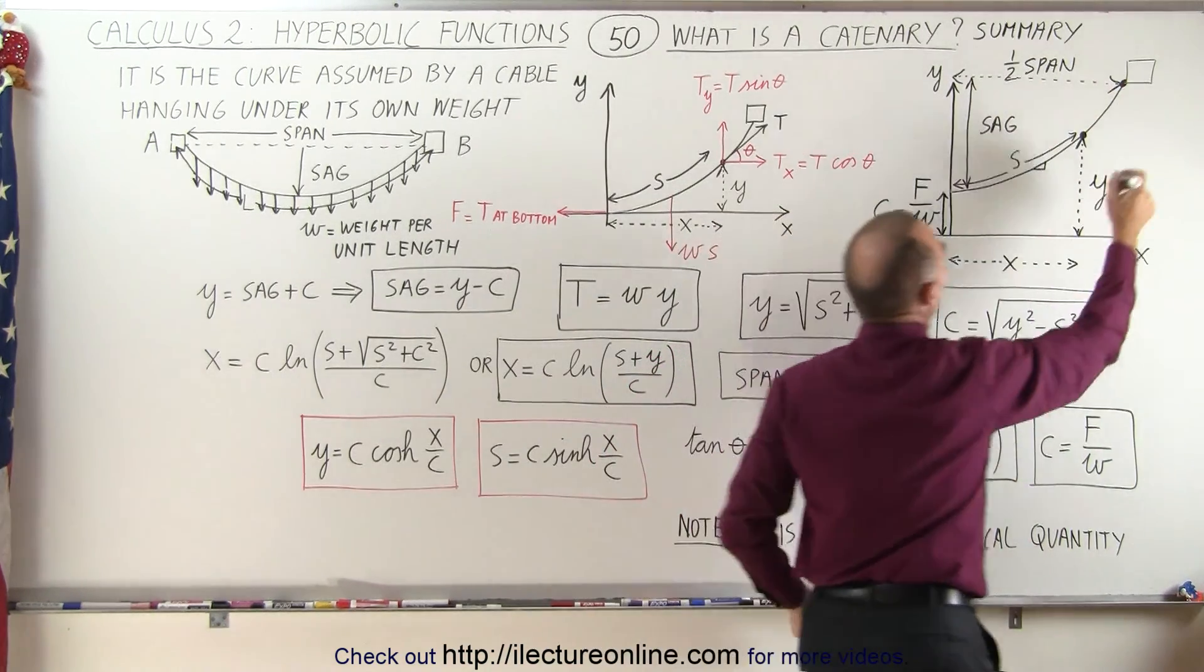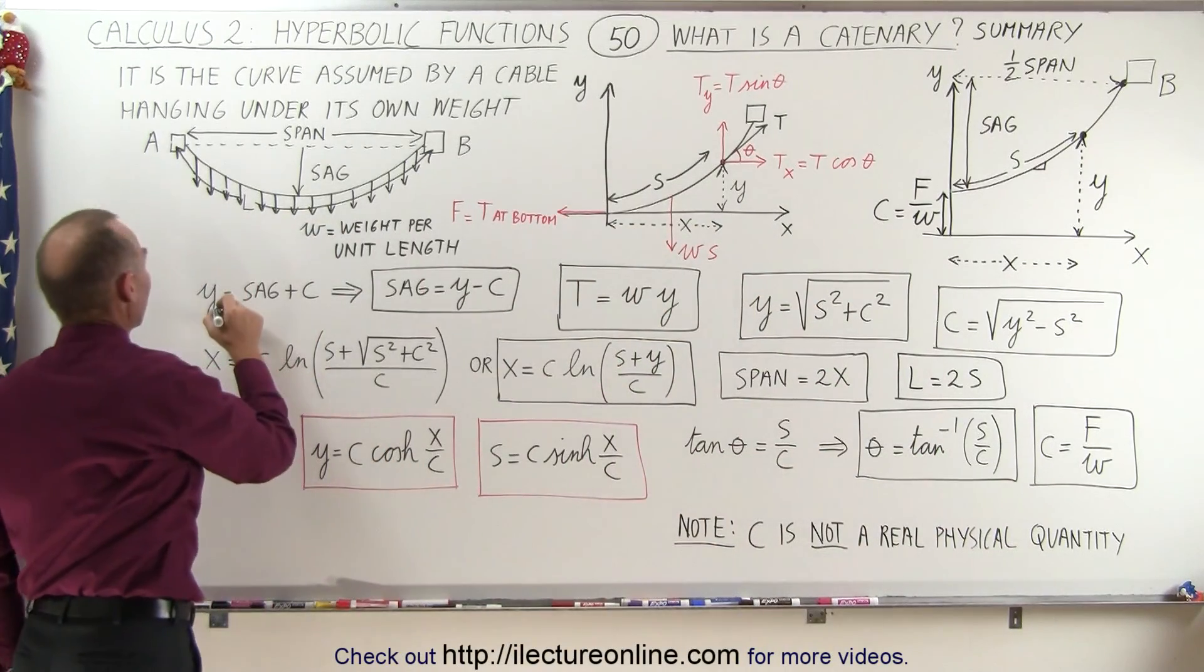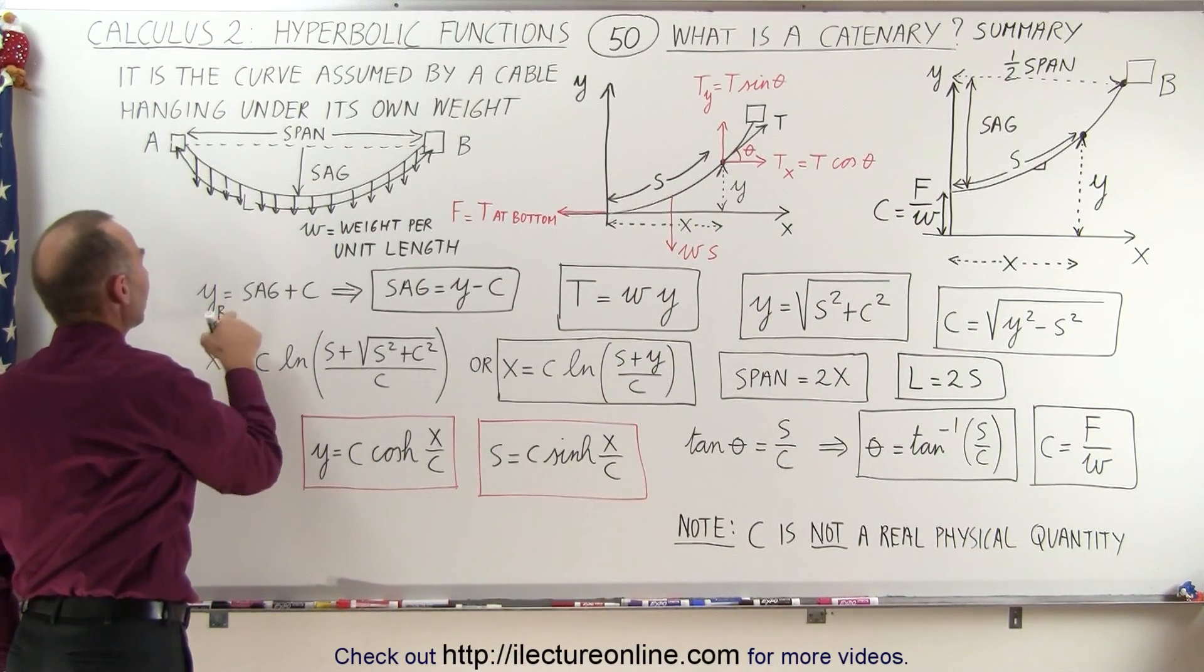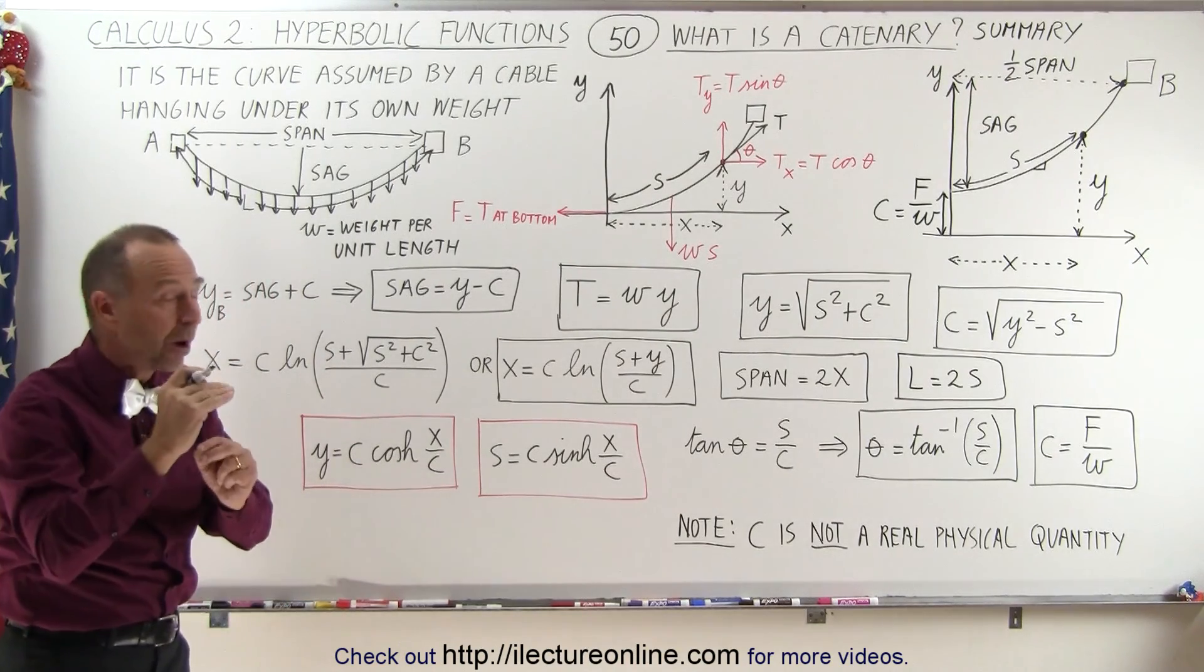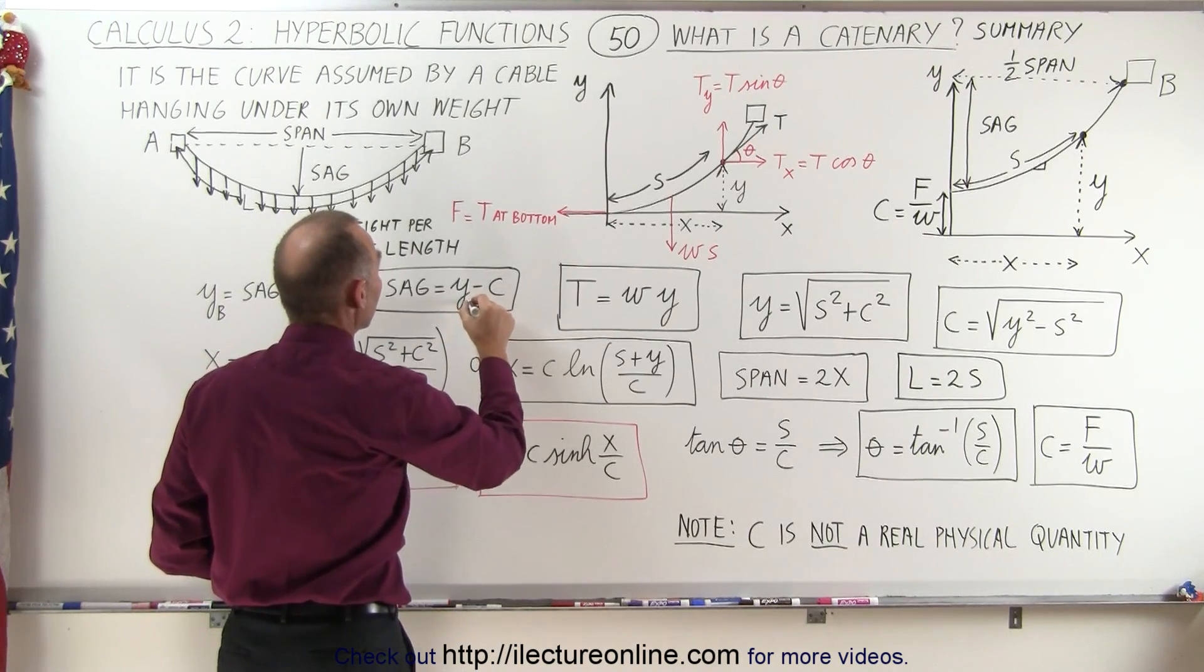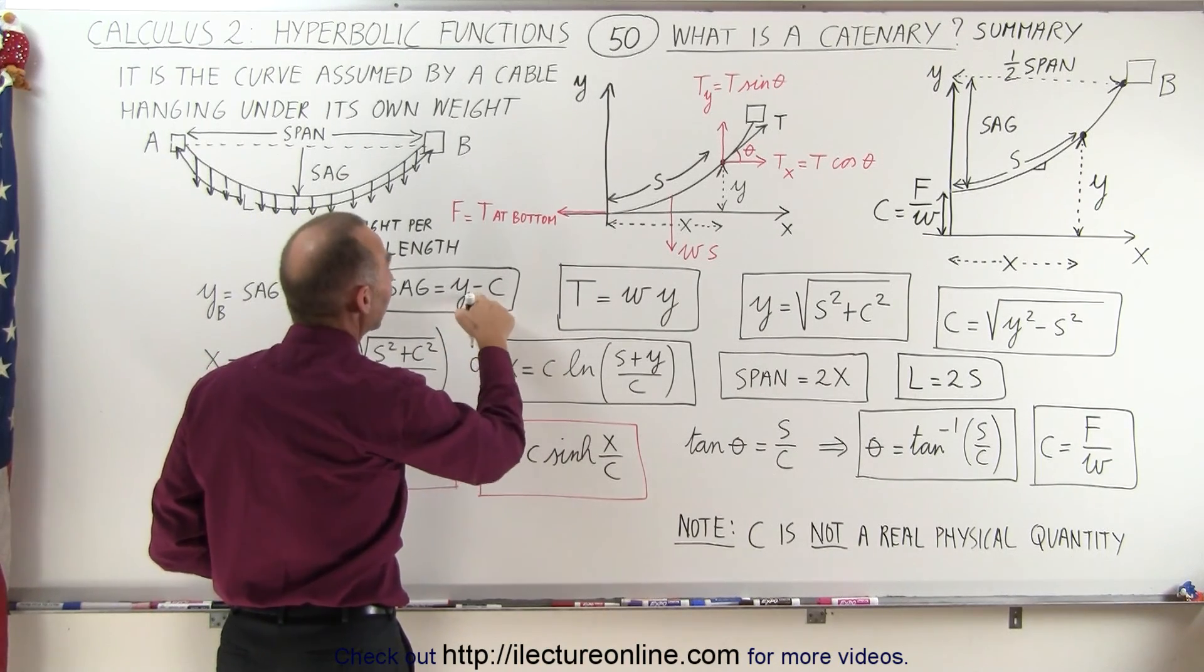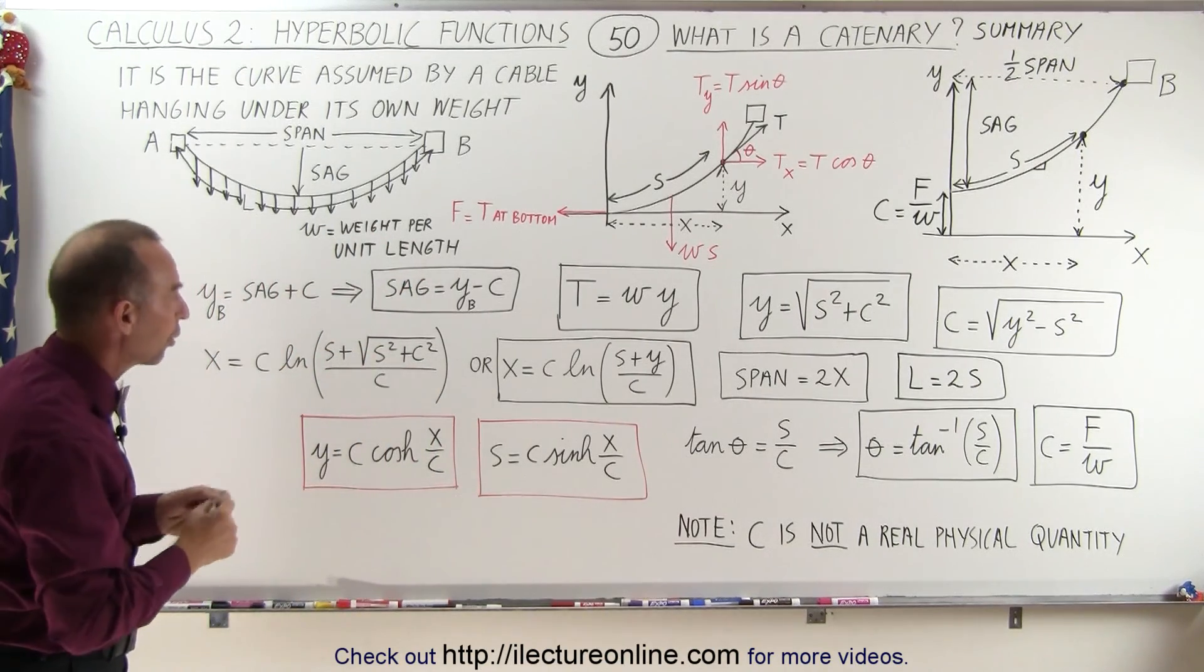So this is our point, let's call it at point b, and so to clarify that we should say that y at b is equal to the sum of the sag plus c. Which means that if we want to know how much the cable sags, we need to know how big y is at b minus c, minus the distance from the bottom of the cable to the origin.